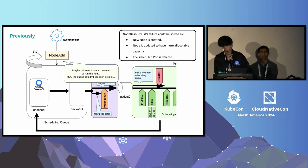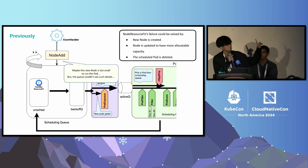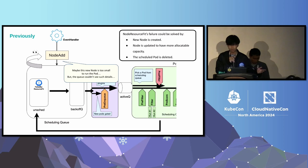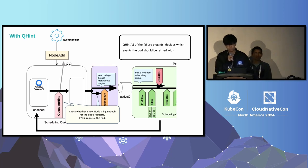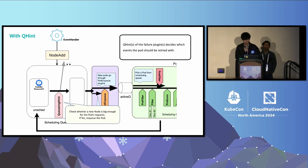Each plugin registers the cluster events that could solve their scheduling failures. For the resource fit plugin, the failure could be solved by a new node being added, an existing node being updated to have more allocatable capacity, or a running pod being deleted. So when the scheduling queue observes a node add event that the plugin registered, it re-queues the pod for scheduling. But thinking more about it, not all node additions can make a pod schedulable — what if the new node is too small? Queuing hints allow scheduler plugins to filter out cluster events so the queue can determine when to re-try more wisely.